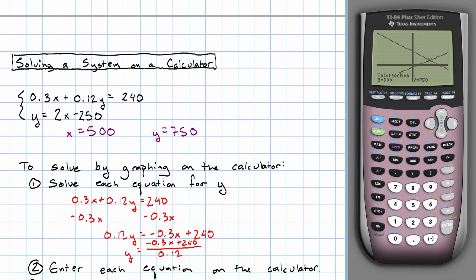0.3 times 500 plus 0.12 times 750, 0.3 times 500 plus 0.12 times 750, is 240.